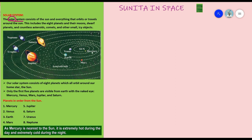After Mercury comes Mars, then Jupiter — this one here is Jupiter. Then there is the asteroid belt, which means there are a lot of asteroids here. In future videos we will learn more about asteroids and comets. After that comes Saturn, then Uranus, and then Neptune.